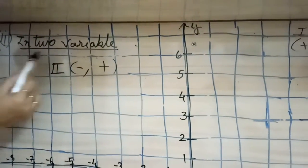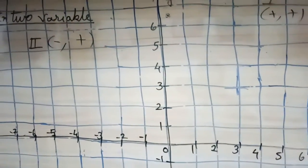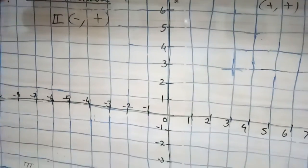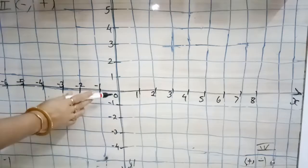In two variables means we have to represent the equation y equals 3 in two variables. So what we will do is plot a graph in a proper way, and again we will go to the point where y is 3.